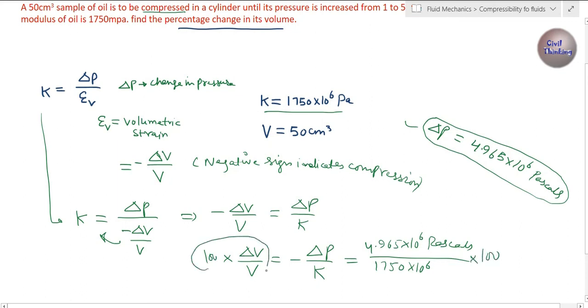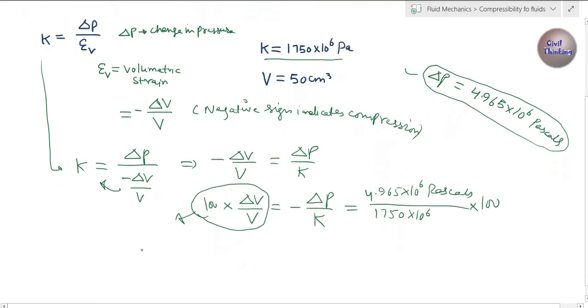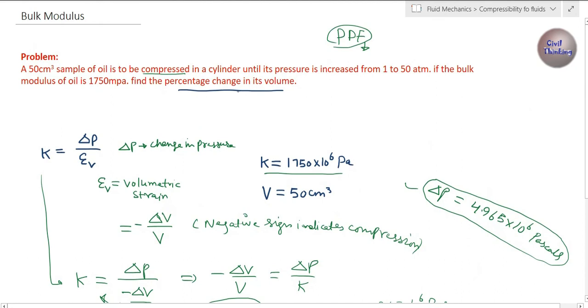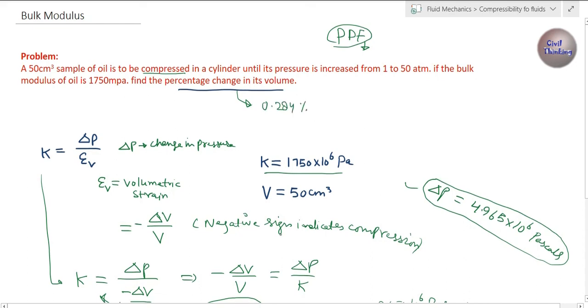100 multiplied by Δv upon v gives us percentage change in volume. When we solve this, the percent change in volume is approximately minus 0.284%. We found the percentage change in volume to be 0.284%.